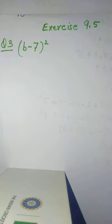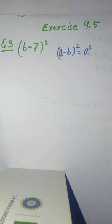Hello students, exercise 9.5 question number 3: (b - 7) whole square. Here we have to apply the identity of (a - b) whole square, which says that a square plus b square minus 2ab.